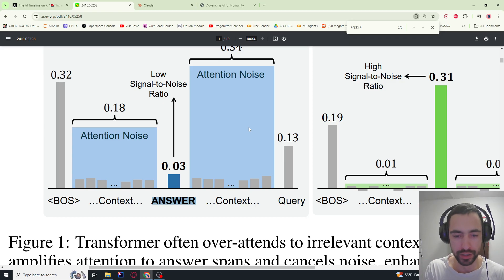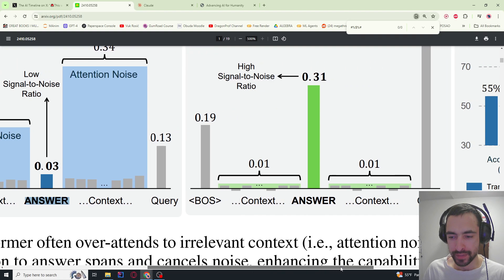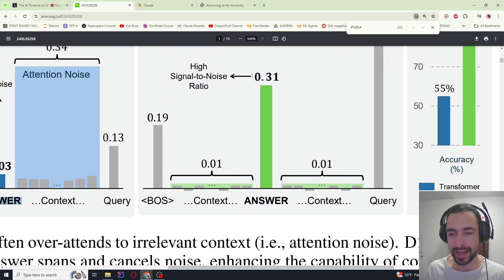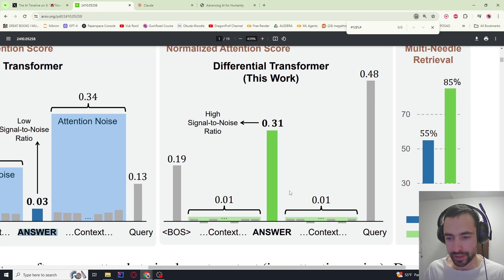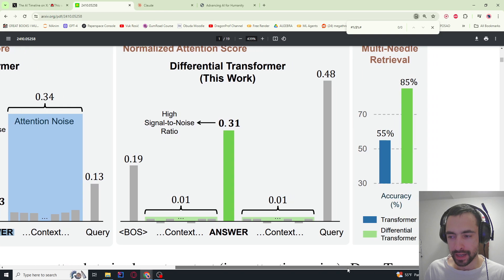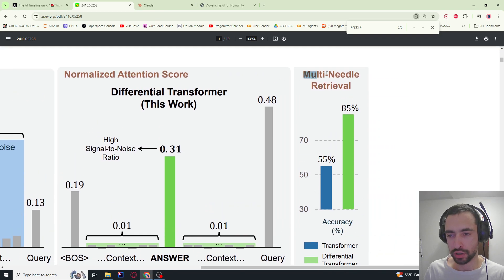When I say random text, I don't mean random letters, just irrelevant text that can be real words. Looking at their method, you see how this answer has huge attention here and all of this other irrelevant stuff is drowned out, minimized. This is why they achieve a high score on this test called multi-needle retrieval.